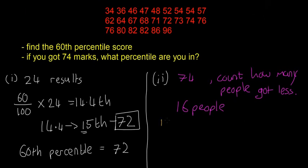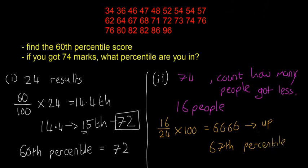Next thing we're going to do is we're going to say 16 divided by 24, because there are 24 people altogether, and then multiply that by 100. So you do that, you're going to get 66.66. And then again, we're going to round up. So it's going to be the 67th percentile. So if you get 74% on that test, then you're going to be in the 67th percentile. So you did better than 67% of people.